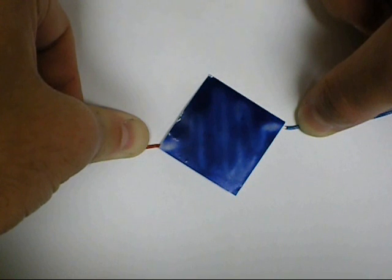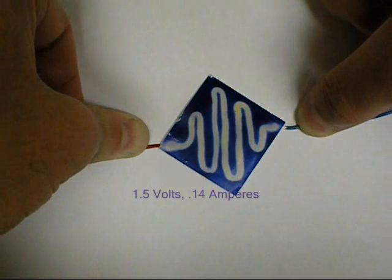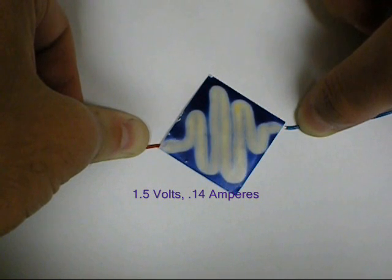To trigger the thermochromic effect, one and a half volts is applied to the conductive trace.